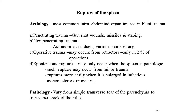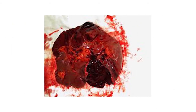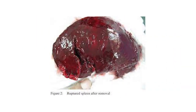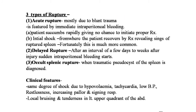Pathology varies from a simple transverse tear of the parenchyma to a transverse crack of the hilum. There are three types of rupture: acute rupture, delayed rupture, and occult splenic rupture. Acute rupture, mostly due to blunt trauma, is featured by immediate intraperitoneal bleeding; the patient may succumb rapidly. Initial shock may be followed by recovery with signs of ruptured spleen becoming apparent.